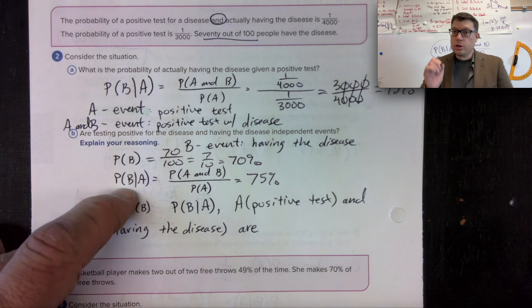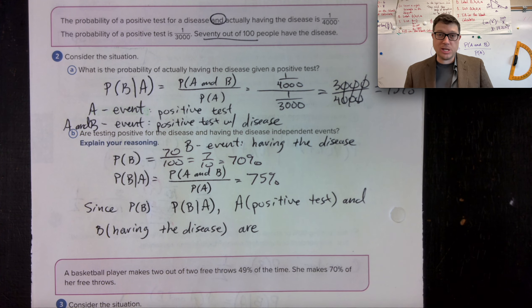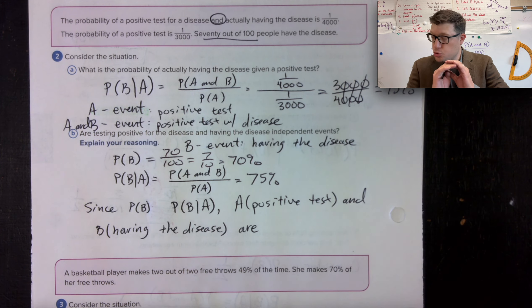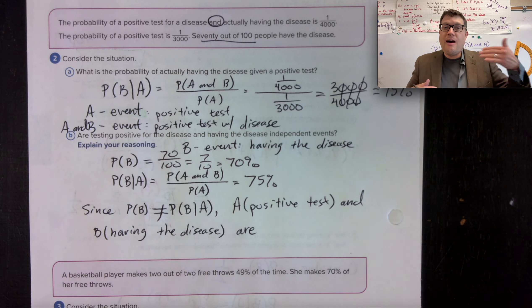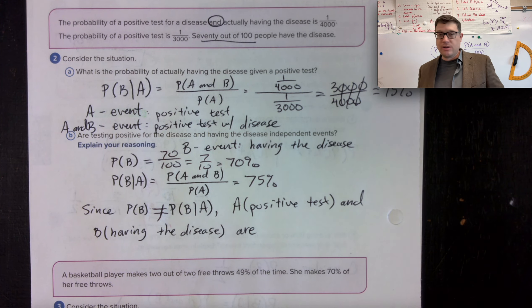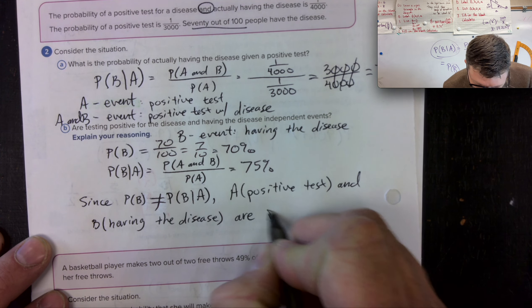They are close, 5% difference between the two of them. But strictly mathematically speaking, they are not equal. So having a positive test and having the disease are dependent.